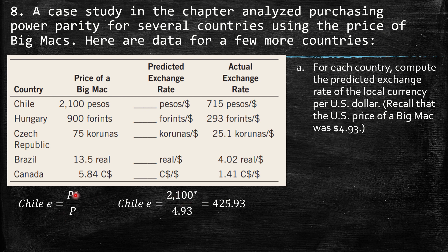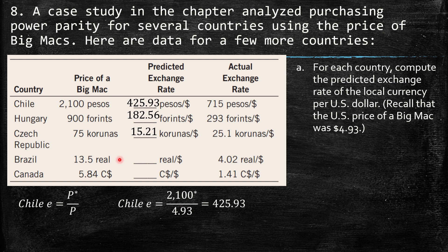The predicted exchange rate for Chile should be exactly 425.93. You replicate this example putting 4.93 as the denominator and the local Big Mac price as the numerator. Computing that: 900 over 4.93 gives one result; 75 over 4.93 gives 15.21; 13.5 over 4.93 gives 2.73 reals; and for Canadian dollars we get 1.18 Canadian dollars per US dollar.